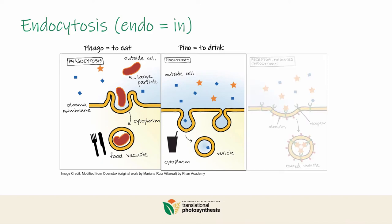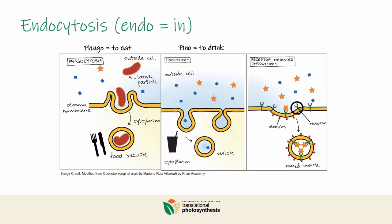Thirdly, we have receptor-mediated endocytosis. That's when the cell can be very picky about what's coming in. A little receptor at the cell surface will bind to a specific cargo before engulfing it. Endocytosis allows the cell to take in liquid or large solid cargo, and sometimes the cell can even be picky about the content of the cargo.